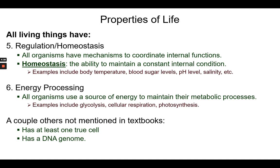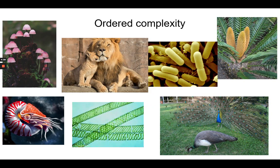A couple of additional criteria of life not always mentioned in textbooks: all living organisms have at least one true cell, and all living organisms have a DNA genome — not an RNA genome. Going through these criteria, ordered complexity means that even if you're a single cell, like a bacterium, you still have a form and a function that keeps you alive.